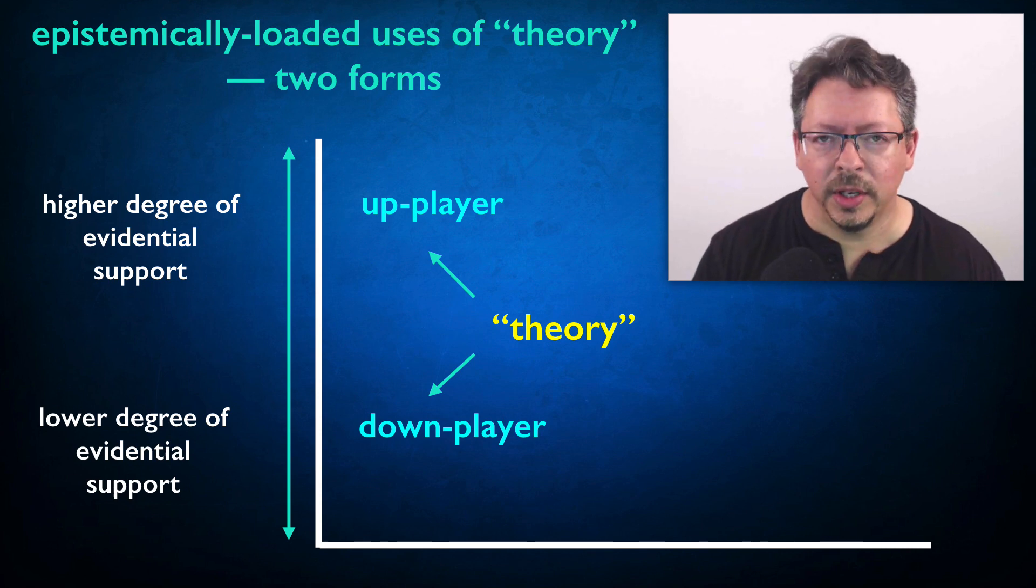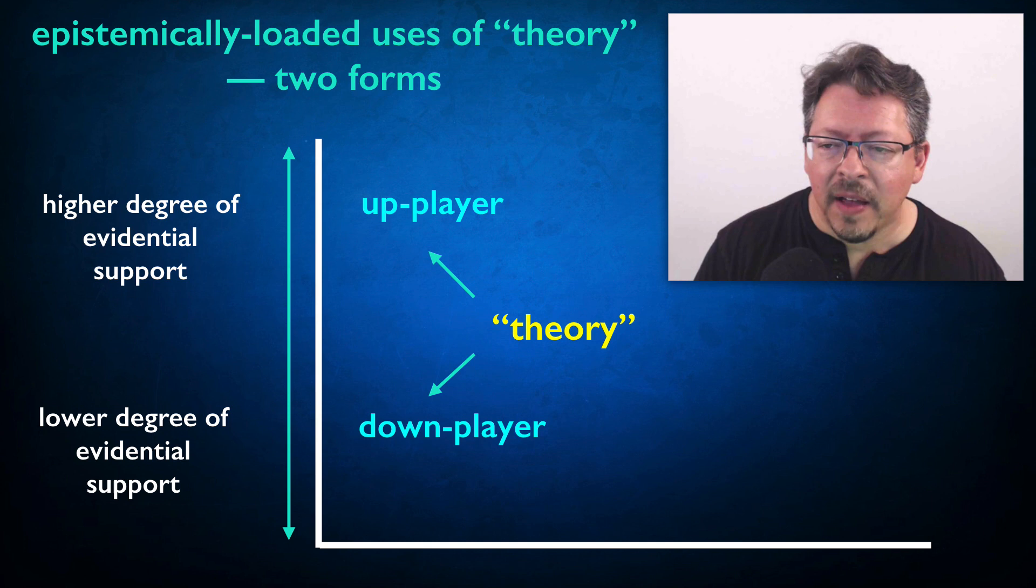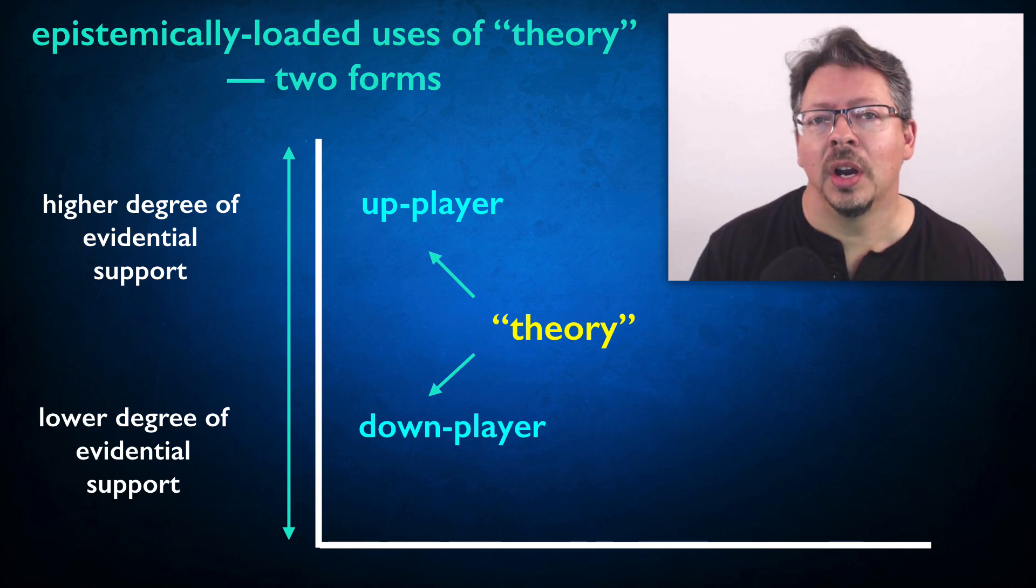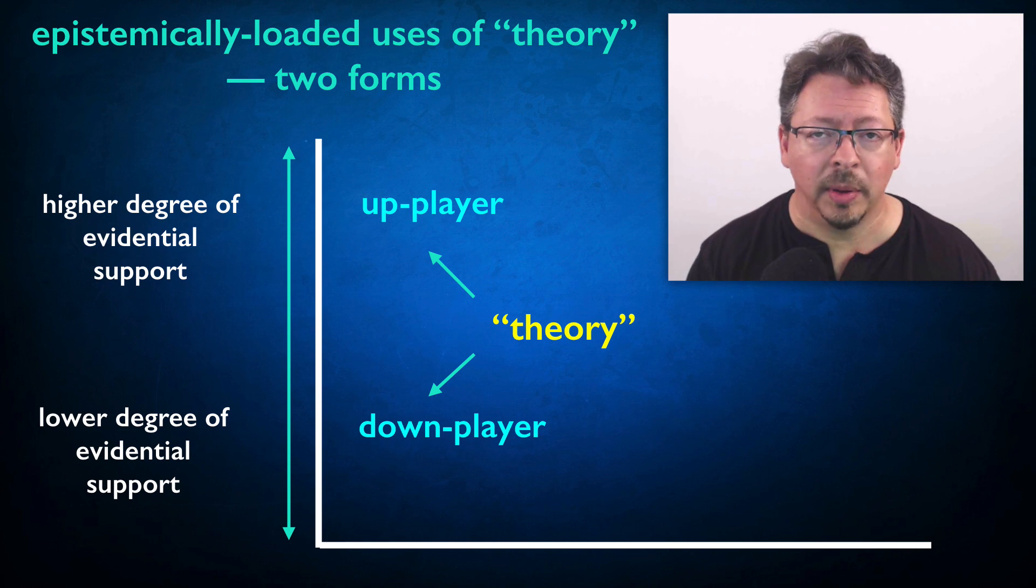When you're using the term theory as a down-player, you're using it to say that the evidence for a particular claim is still weak or ambiguous, that it still has the status of a conjecture rather than an established scientific fact. We saw an example of this already.